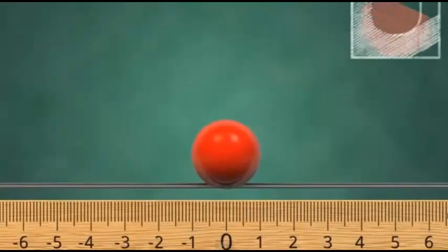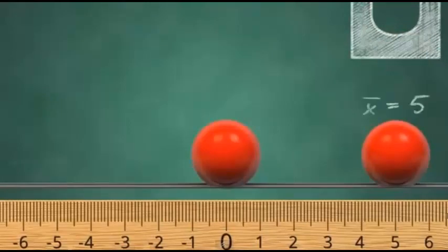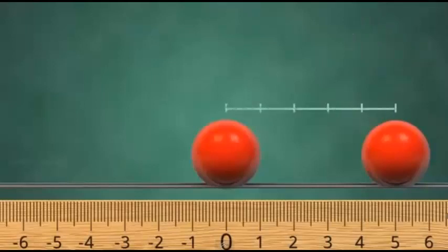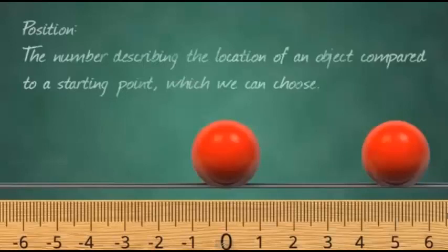If we drop another ball somewhere else, we can compare the locations of the two balls. This new ball has a constant position equal to positive five centimeters, because it is five units to the right of the origin at zero. And since we've set up the ruler so that balls to the right of zero have positive position, this means that balls to the left of zero will have negative position. So let's define position as the number describing the location of an object compared to the starting point, which we can choose.